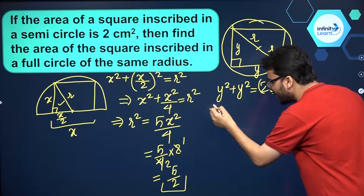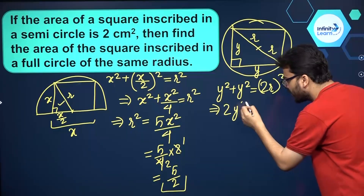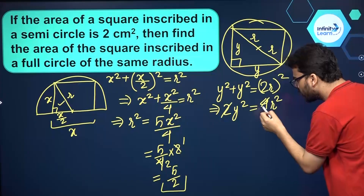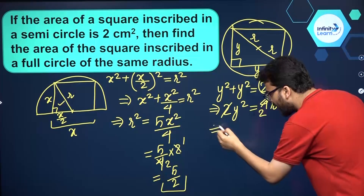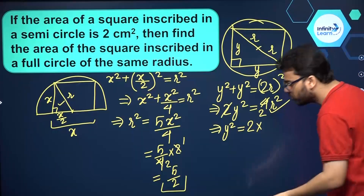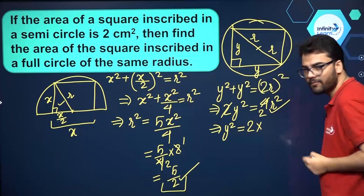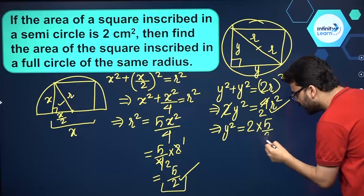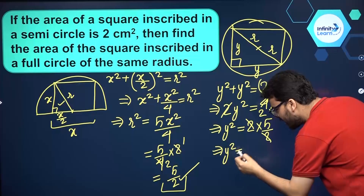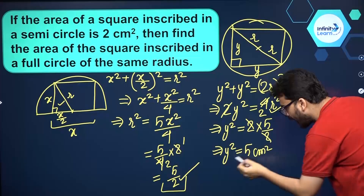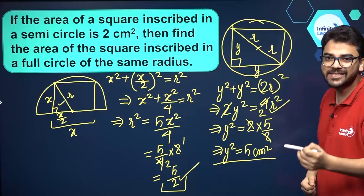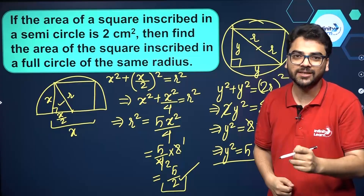Using Pythagorean theorem: y squared plus y squared equals (2r) squared, so 2y squared equals 4r squared. Cancelling 2, we get y squared equals 2 times r squared. We already know r squared equals 5 by 2, so substituting: y squared equals 2 times 5 by 2, which simplifies to 5 centimeter square. And y squared is the area of this square, so the answer is 5 centimeter square.